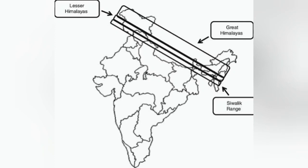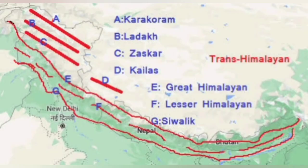The second one is the Lesser Himalayas, also called the Himachal. It generally consists of metamorphosed crystalline sediments. Important ranges include the Dholadhar, Pirpanjal, Nagdiba, Mahabharat and Mussoorie Ridge. The third one is the Greater Himalayas, also called the Himadri. It is the most continuous, loftiest and northernmost range of the Himalayas, with a core of Archean granites, gneisses and schist rocks. This range contains some of the highest mountain peaks of the world. The fourth one is the Trans-Himalaya, also called the Tibetan Himalayas, and consists mainly of the Karakoram, Ladakh and Kailash ranges.